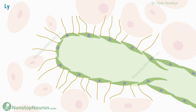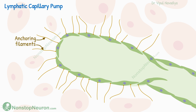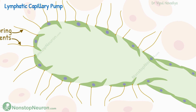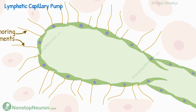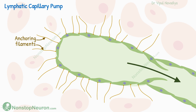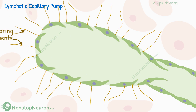The next factor is the lymphatic capillary pump — this one is amazing. The endothelial cells of the terminal capillary are tethered to surrounding tissue by anchoring filaments. When excess fluid enters the interstitium, the entire tissue expands; due to tethering, the endothelial cells are also pulled. During expansion, the valves open and let fluid in. Then when the tissue is compressed, the increased pressure inside the capillary closes the valve, pushing fluid forward in the lymphatics. Thus, the capillary pump helps absorb interstitial fluid and also pushes it forward.